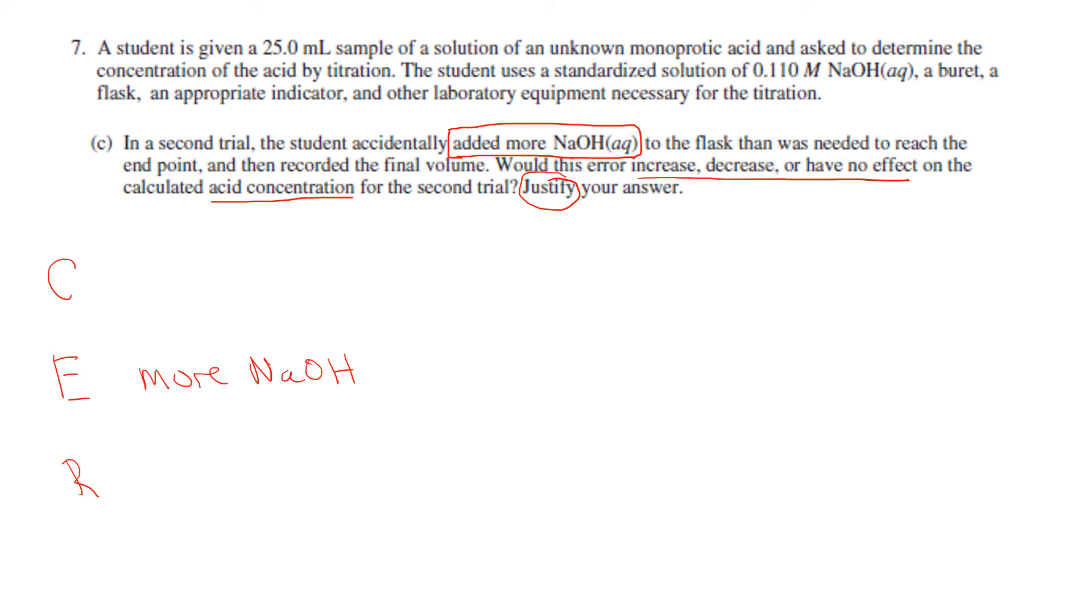If I did that, if I added more NaOH, that would mean I have more OH⁻ ions. And if I have more OH⁻ ions, that means I would assume that there are more hydrogen ions, because I know that the moles of my hydroxide ions is going to be equal to the moles of my hydrogen ions at the equivalence point.